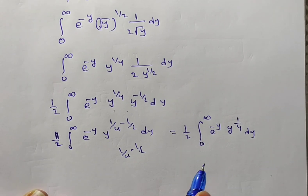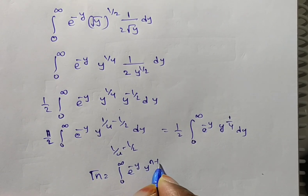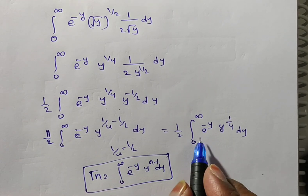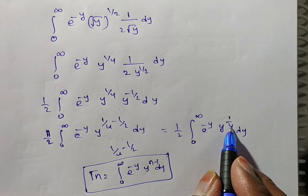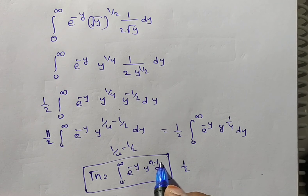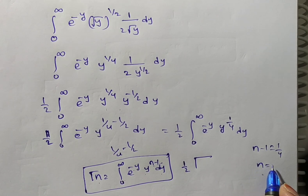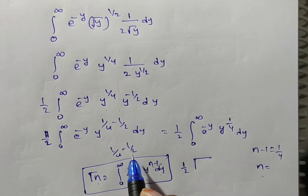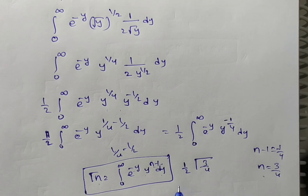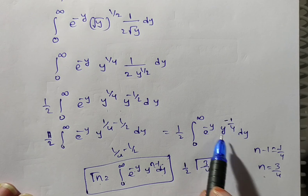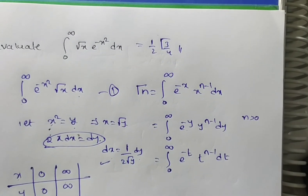Now observe: this is in the form of the gamma function. Gamma n equals integral 0 to infinity of e to the power of minus y times y to the power n minus 1 dy. Here y to the power minus 1 by 4 means n minus 1 equals minus 1 by 4, so n equals 3 by 4. Therefore the integral equals 1 by 2 times gamma 3 by 4. This is the answer. This type of problem is asked in examinations. Thank you for watching.